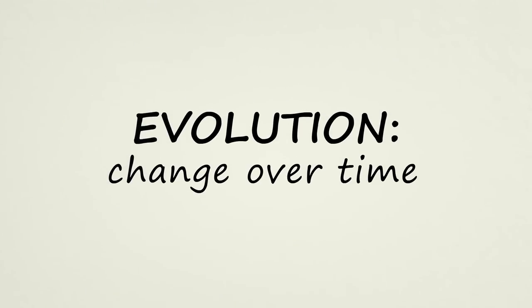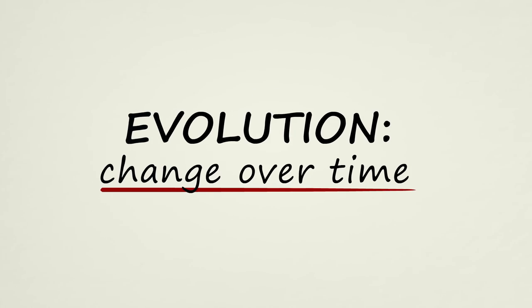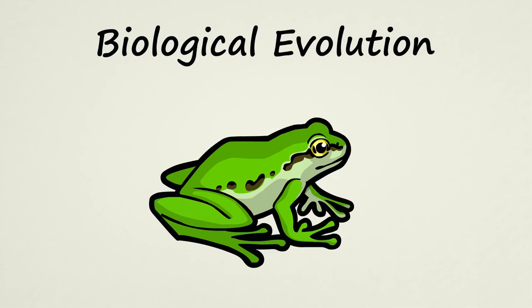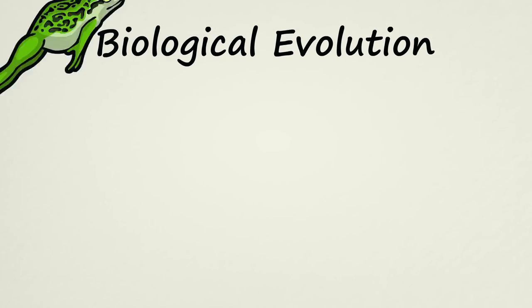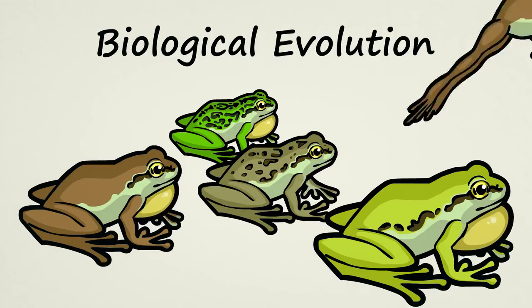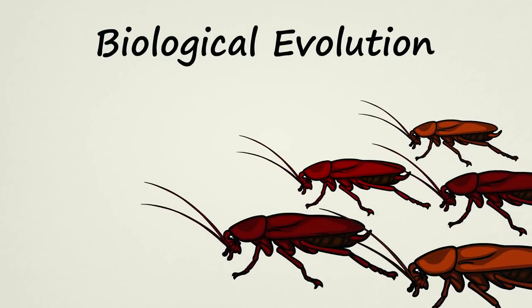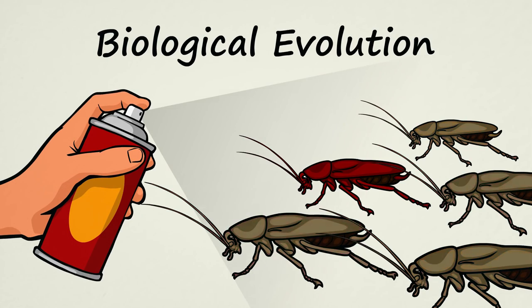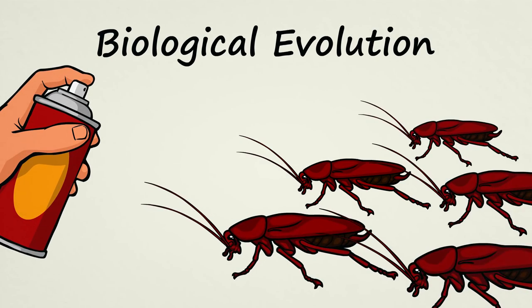The word evolution simply means change over time. Biological evolution deals with changes in things which are able to reproduce. Living creatures make copies of themselves. The change over time that we see in biological evolution is not just random change. Often times it is adaptive change.